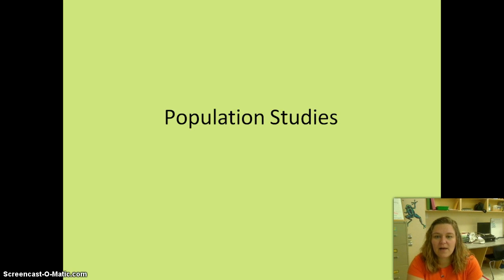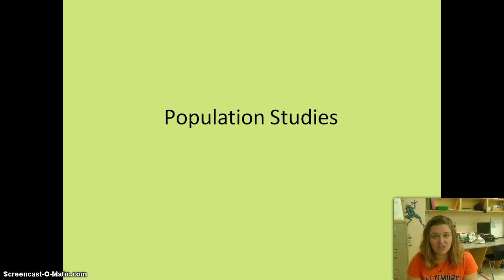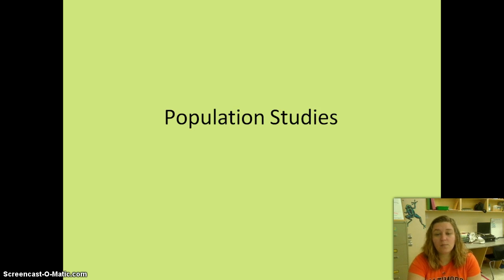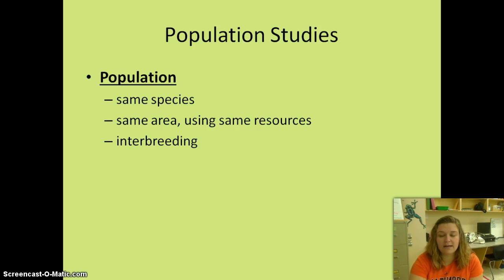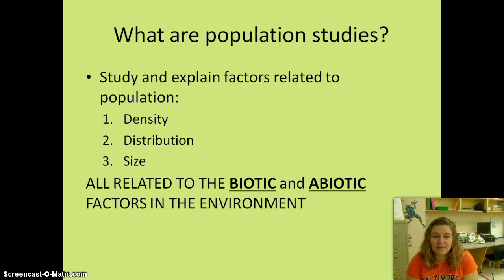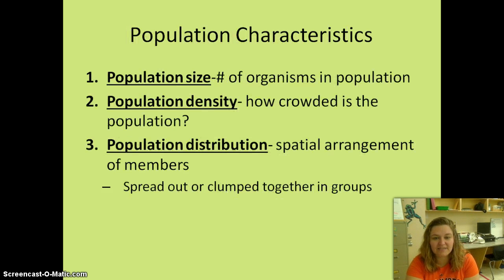Let's move on and talk about population studies. Later this week we're going to talk about communities and ecosystems — basically taking everything from that pyramid and going more in depth. A population is the same species in the same area using the same resources and interbreeding. We study populations so we can figure out different things: the population's density, its distribution, and its size — and all of these are related to the biotic and abiotic factors in that environment.